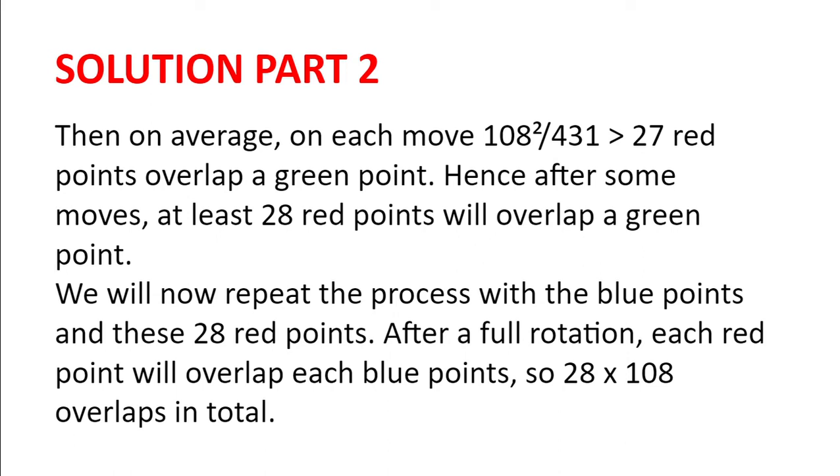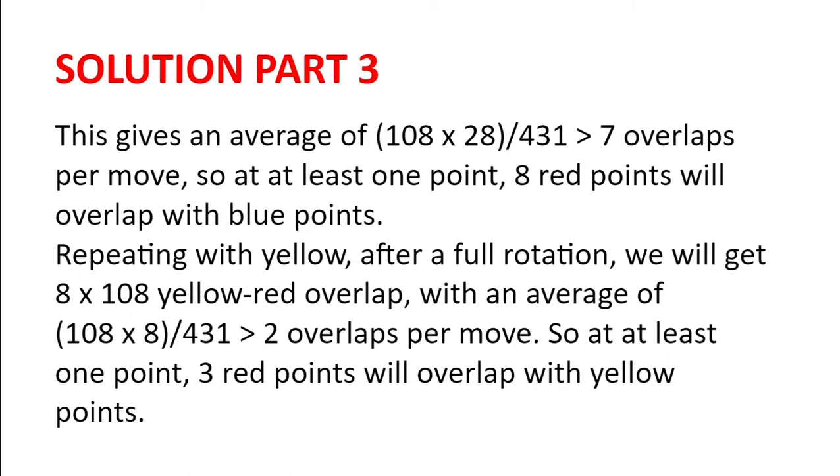So now we will repeat the process with the blue points and these 28 red points. After a full rotation, each red point will overlap each blue point, so 28 multiplied by 108 overlaps in total. This gives an average of 108 multiplied by 28 divided by 431 overlaps per move, which is just over seven overlaps per move. So at least one point, eight red points will overlap with blue points.